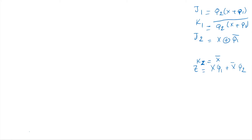Since we're doing analysis — essentially the reverse of design — we need to enter these equations into K-maps. To make J2 easier to enter, we expand it: X XOR Q1-bar equals X·Q1 OR X-bar·Q1-bar. Similarly, J1 can be multiplied out as X·Q2 OR Q1·Q2. We will draw five K-maps, one for each of these expressions.